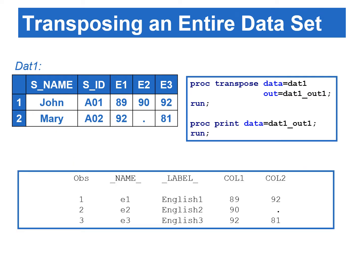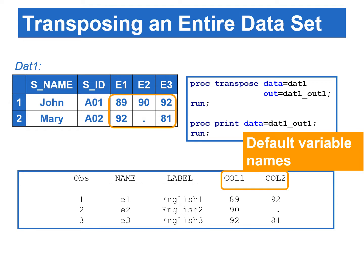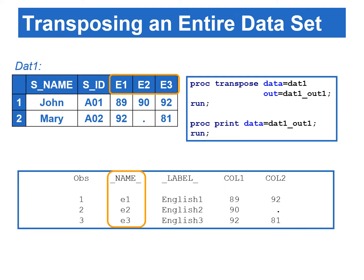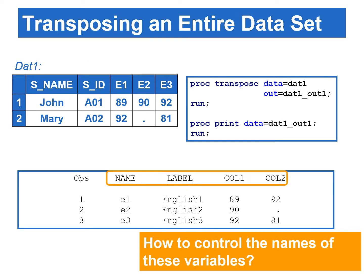The OUT= option is used to specify the name of the transposed data set. By default, without specifying the names of the transposing variables, all the numeric variables from the input data are transposed. Variables E1 to E3 from the input data set are transposed to two variables with default variable names, COL1 and COL2. The names of the transposed variables are stored under the variable _name_, and their labels are stored under _label_. SAS assigns default variable names in the transposed data set.